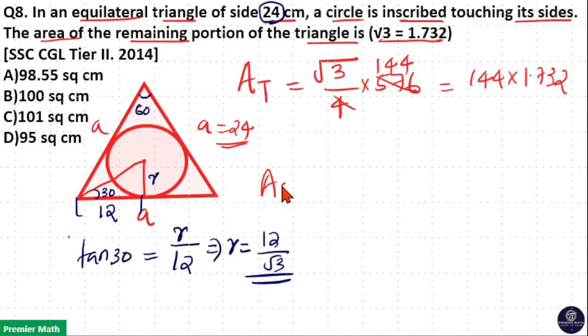Now, area of circle equals πr². Pi equals 3.14, and r is 12/√3, means r² is 144/3. Dividing 3.14 by 3 gives 1.046, which equals 144 into 1.046.